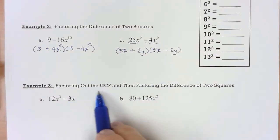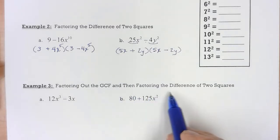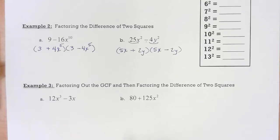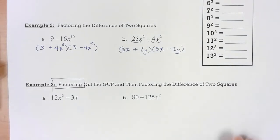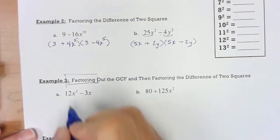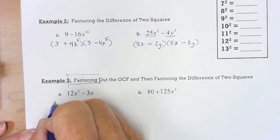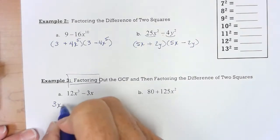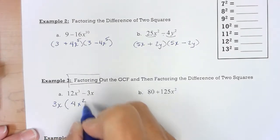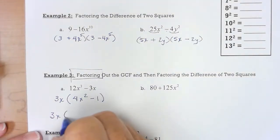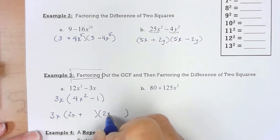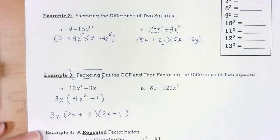Now it says here, factor out the greatest common factor, then factor the difference of two squares. You're not going to have directions like that. Your directions will be factor completely. So you always have to look for the greatest common factor. In this first one, I see a 3 and an x. I'm going to bring the 3x down. I've got a difference of perfect squares. So I've got 2x, square root of 1. This is the answer. That is factoring it completely.